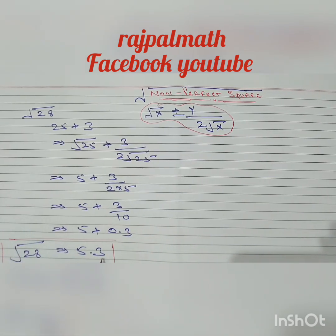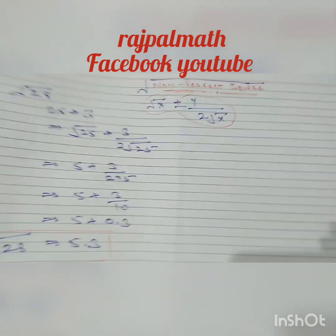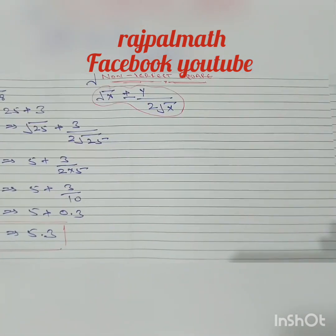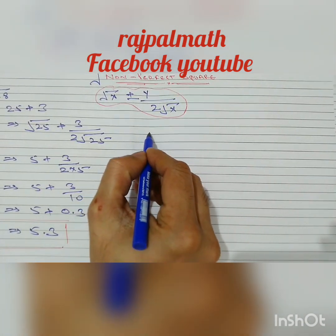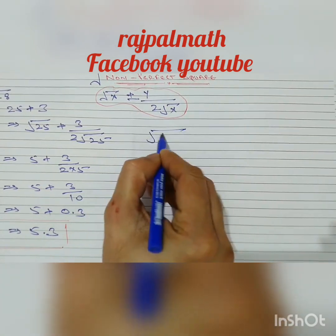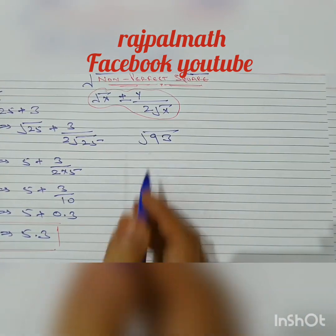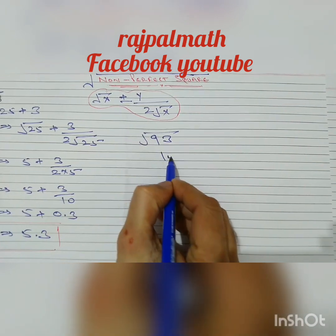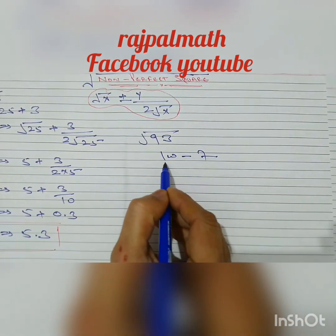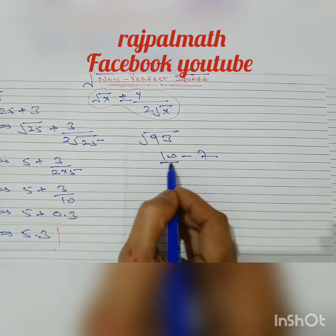5 plus 0.3 equals 5.3. Therefore, under root of 28 is 5.3. For another example, find the square root of 93. 93 can be written as 100 minus 7, where 100 is a perfect square.